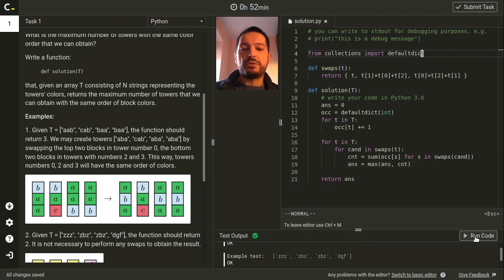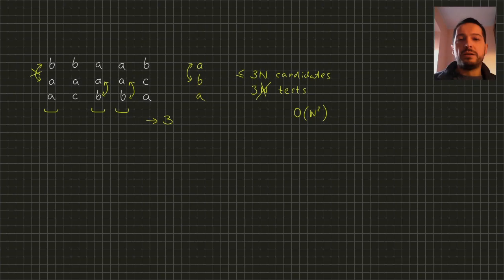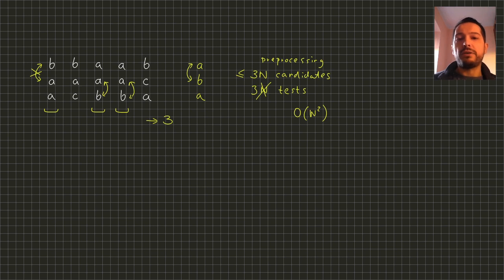The program is ready to run. In this algorithm we have additional preprocessing on a hash map that takes linear time, and then for the linear number of candidates we have a test in constant time. So the overall complexity of this algorithm is linear in the size of the input. This program gets full points for correctness and performance.